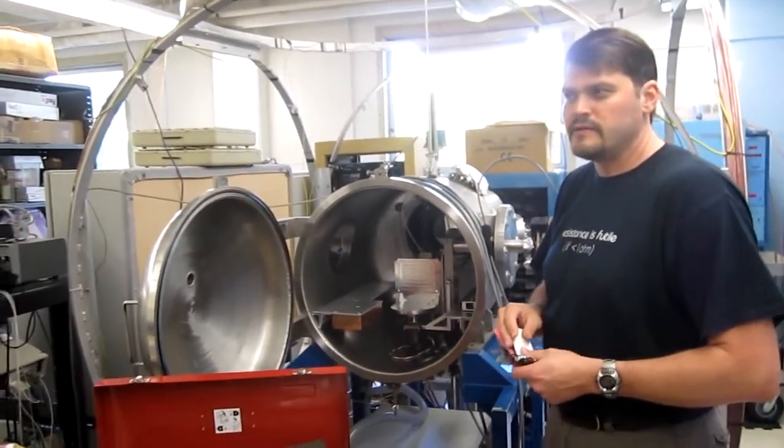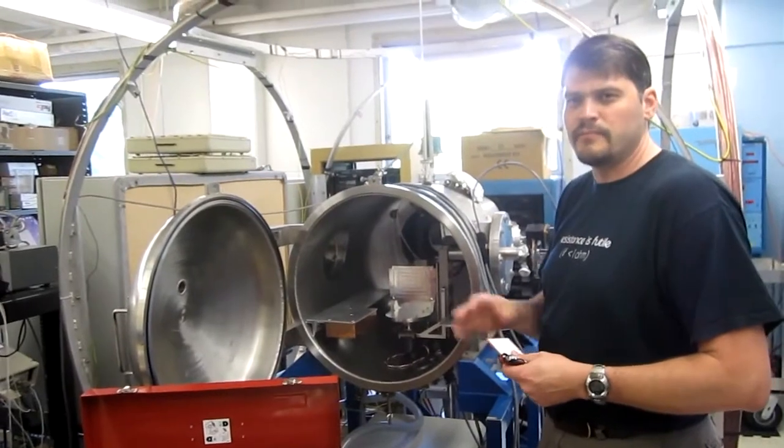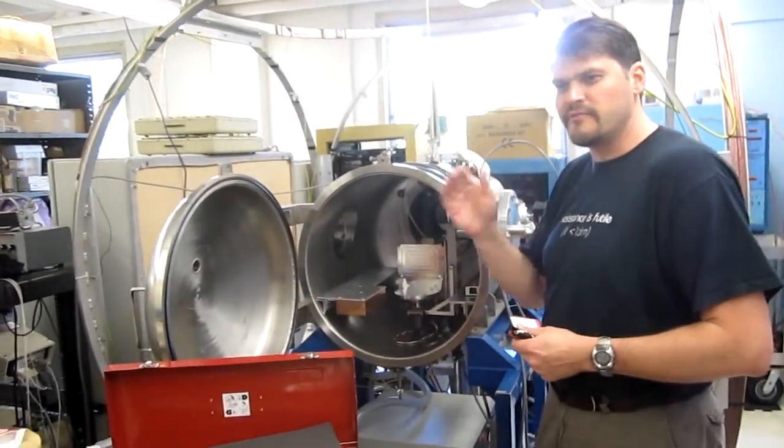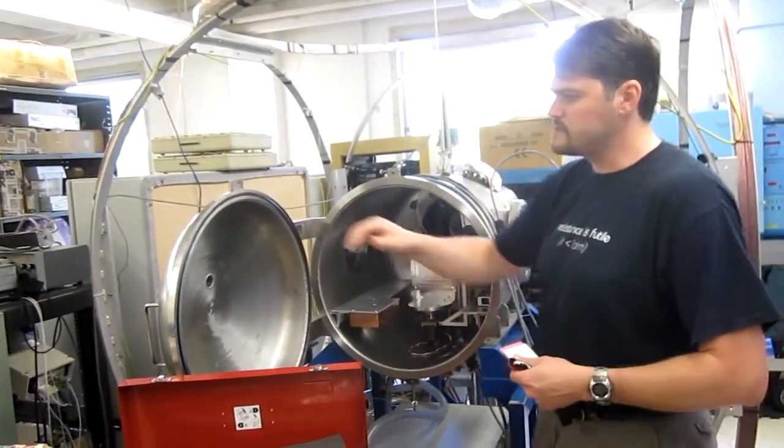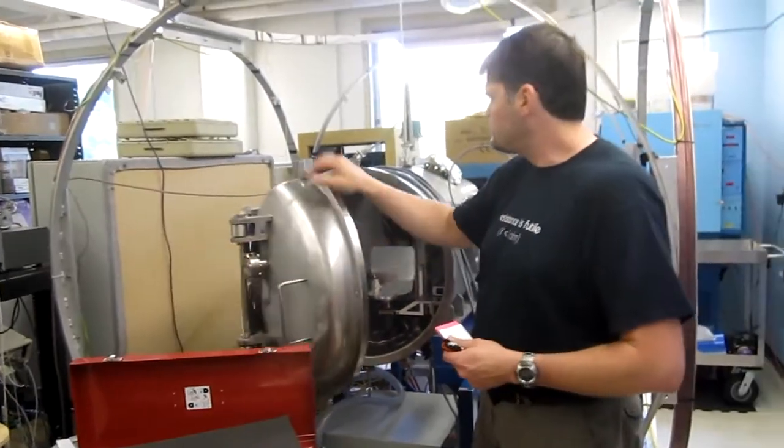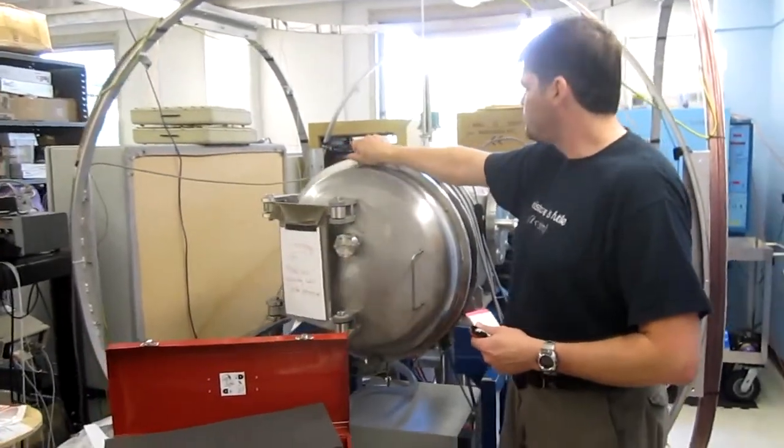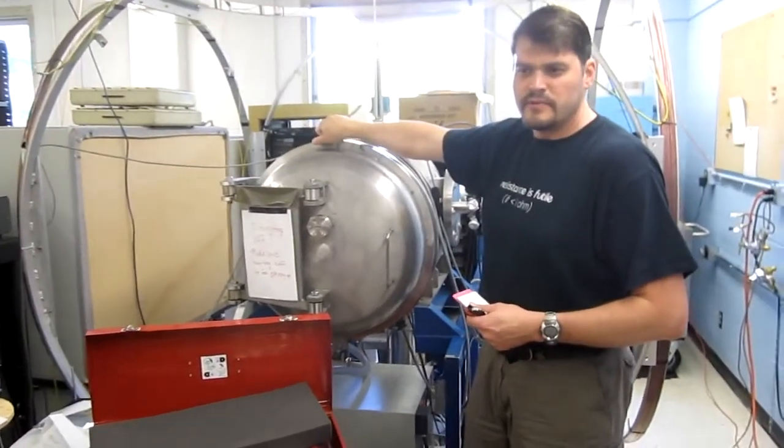But when we got to lower energies, the magnetic fields start to influence the trajectory of the electrons. So we want to shield the whole thing in a material called mu metal, which is supposed to shield out the magnetic field.